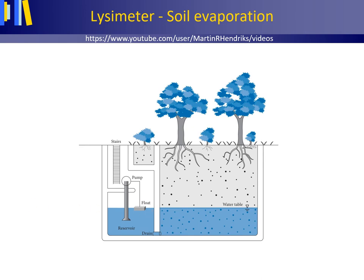In a weighing lysimeter, the change in water storage is determined by the difference in mass of the lysimeter. The evaporation is estimated from the water balance. The diameter of a lysimeter typically varies from 0.5 to 2 meters, with larger devices having surface areas of the order of 35 by 25 square meters. Lysimeters are difficult and expensive to install, but are most useful in experimental research for obtaining empirical equations to estimate evaporation from meteorological variables. In the Netherlands, four lysimeters with a long track record since the late 1930s are located in the dunes nearby the township of Castricum.